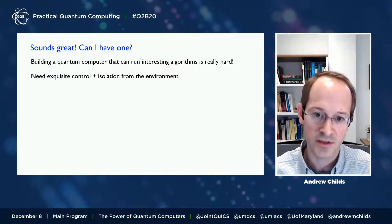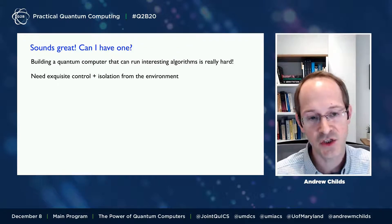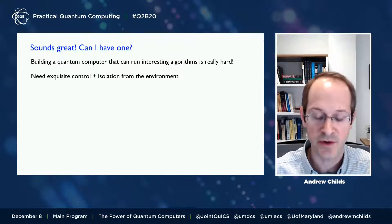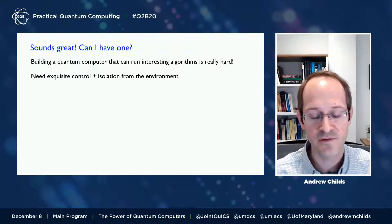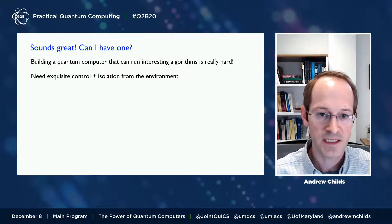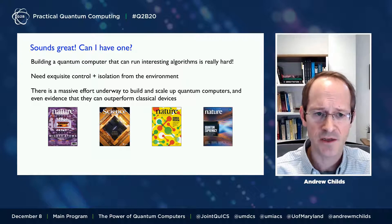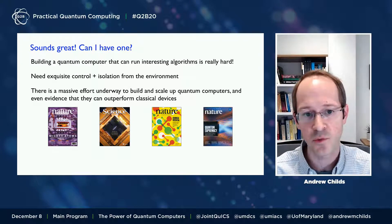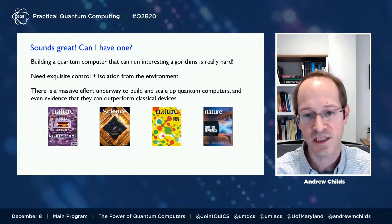These two demands — controlling qubits precisely and isolating them from the environment — are in tension with each other. We need to find a way of doing both of these things well, and this makes it very difficult to build a quantum computer. There is a very large effort underway worldwide to try to build quantum computing devices and scale them up to the point where they can be used to perform interesting computations.